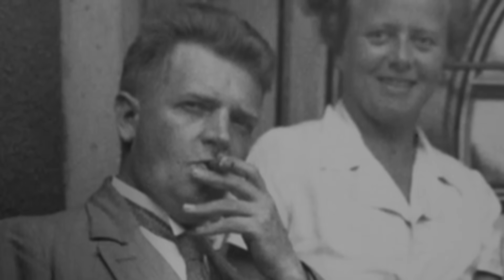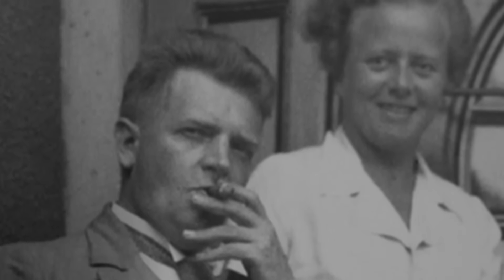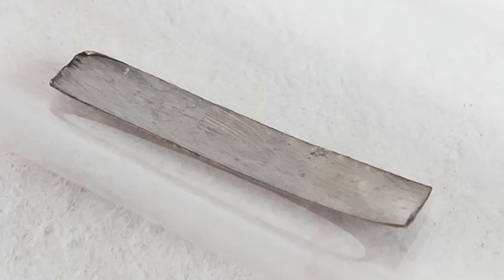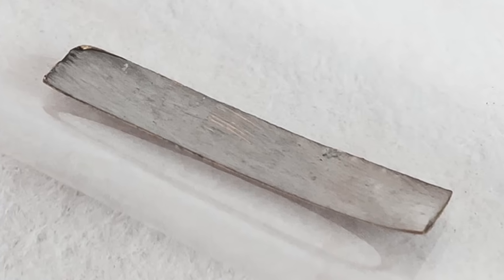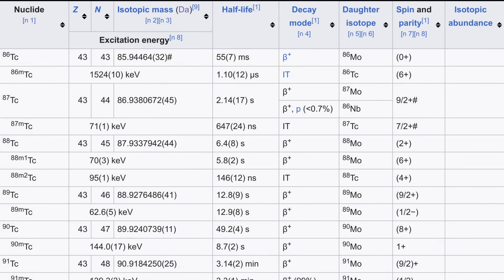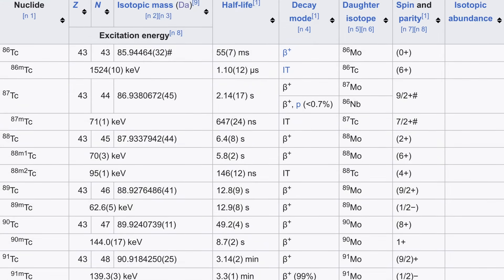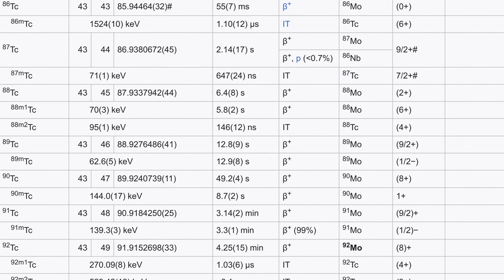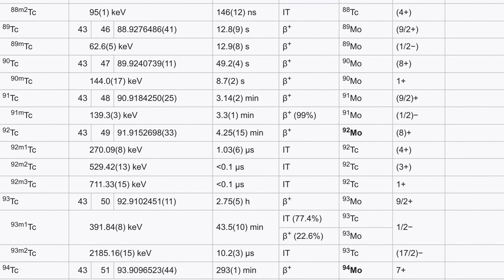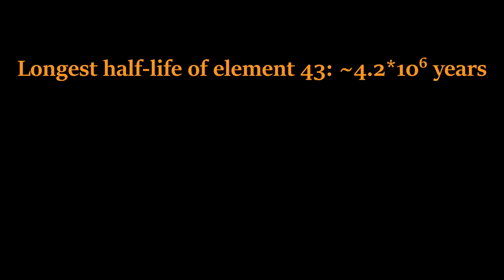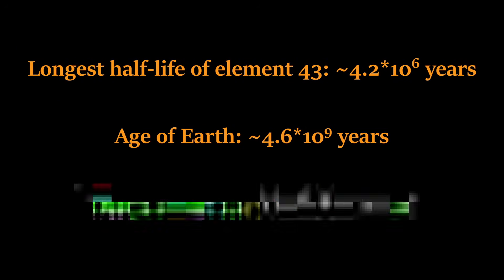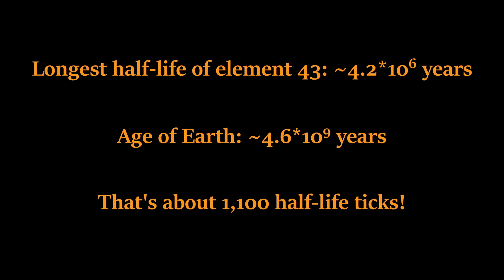The Noddacks' pursuit to discover element 43 was one of many unsuccessful attempts to find the element. Unbeknownst to the Noddacks, as well as all scientists before them, element 43 is not naturally found on Earth whatsoever. This is due to just how unstable it really is — there are no stable isotopes of element 43, and even the most stable isotope has a half-life of 4.2 million years. Given the age of the Earth to be about 4.6 billion years, even the most stable isotope of element 43 would be long gone well before humans even existed.